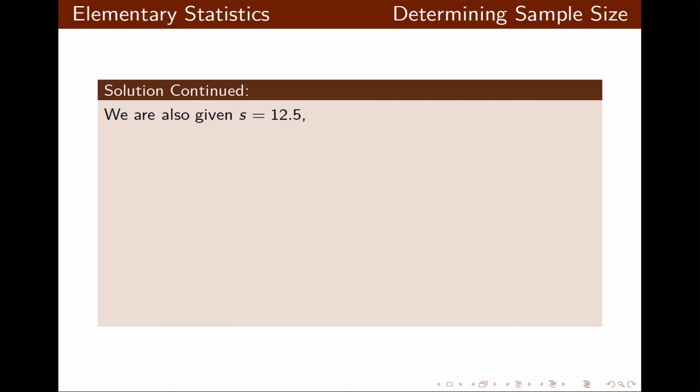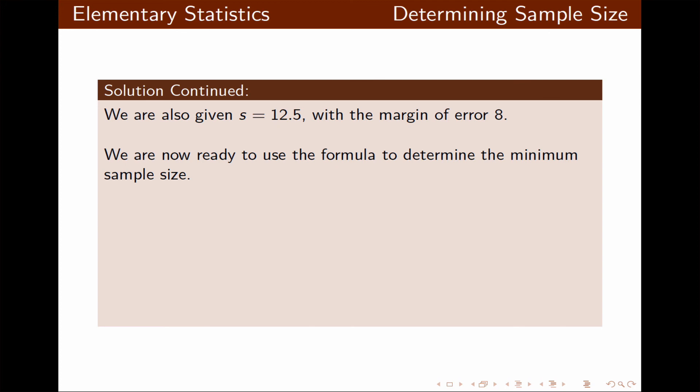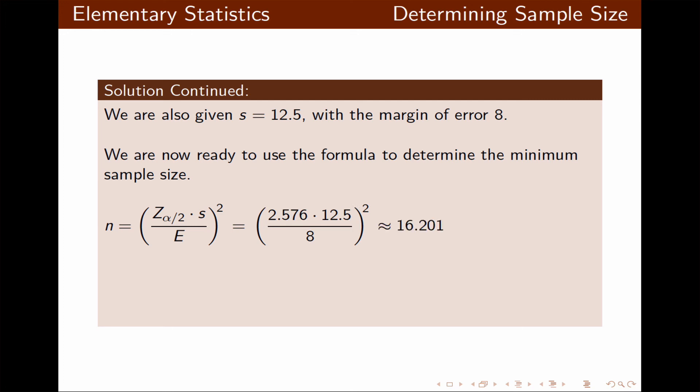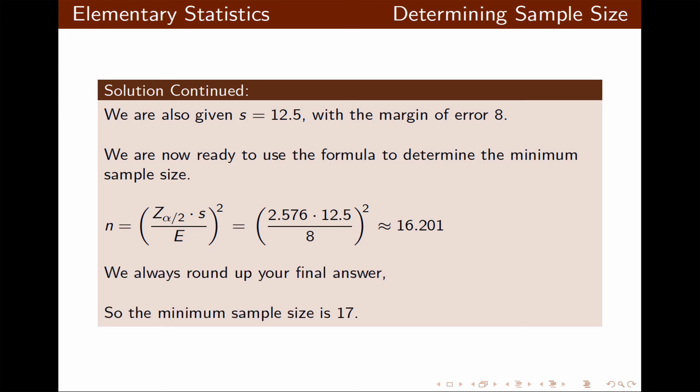We're given the sample standard deviation and the margin of error. Since sigma is unknown, we use the second formula, plug in the values, and simplify. Since n is in decimal, we round up. The minimum sample size needed is 17.